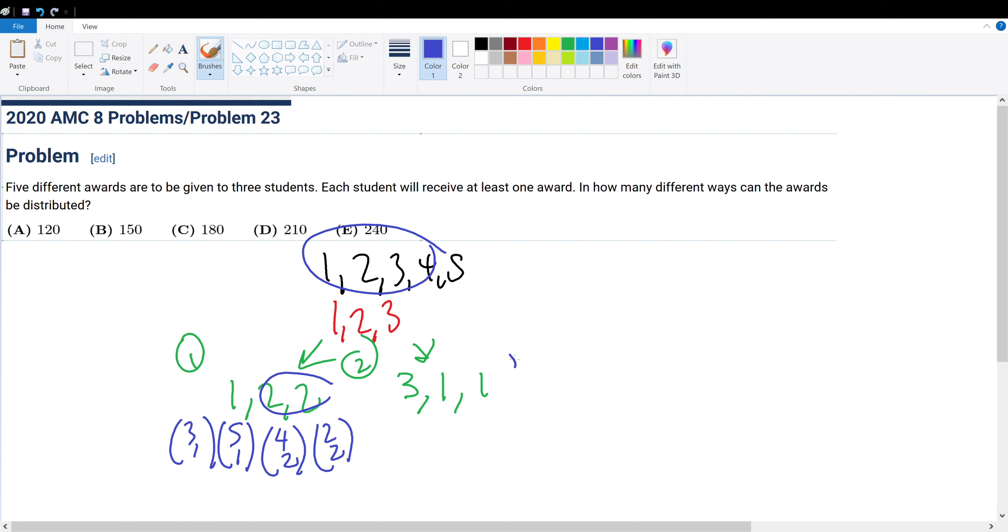What about test case number two? How many ways are there to pick out this student that gets three prizes? Well, there is three choose one. And how many prizes can he pick out out of the five total that there is? Five choose three.